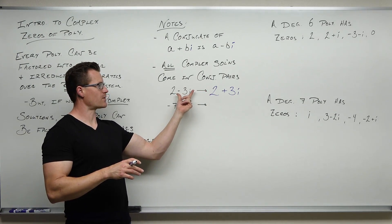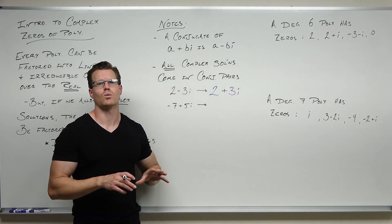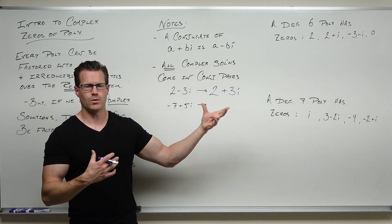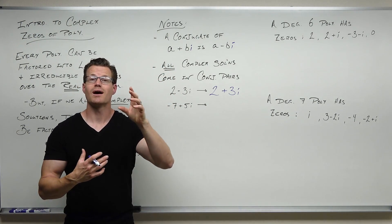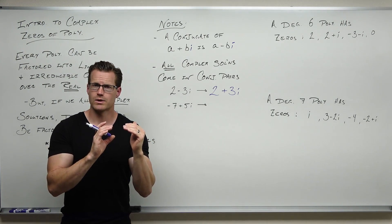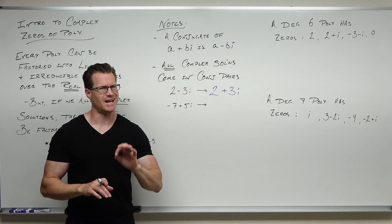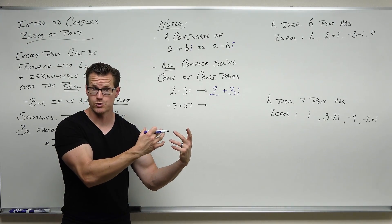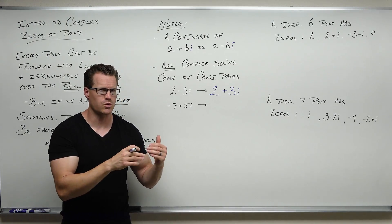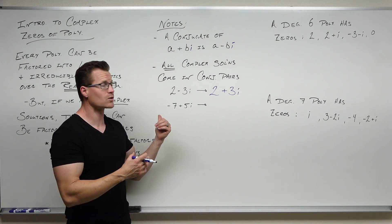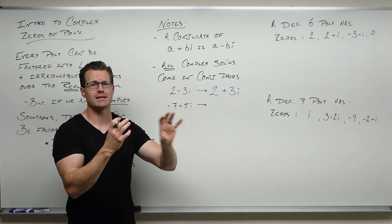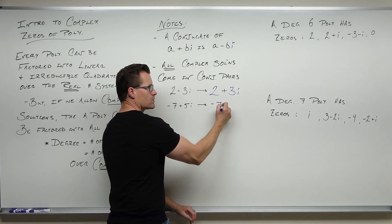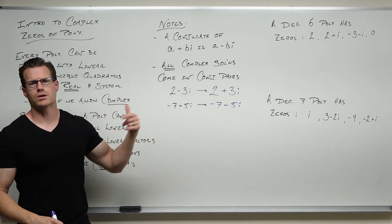Notice how the real part doesn't change — the imaginary part does change sign. They always pair up like that. You might remember from the last few videos how irreducible quadratics create two solutions that are complex. Every irreducible quadratic creates a complex pair of solutions. Why is it irreducible? Because you can't factor it over real numbers — you can only factor irreducible quadratics over complex numbers. They still have two solutions since a quadratic has power two, but they're going to be complex solutions: a real part plus an imaginary and minus that same imaginary. For example, if you had −7 + 5i, the complex conjugate would be −7 − 5i. Those are complex conjugate pairs.